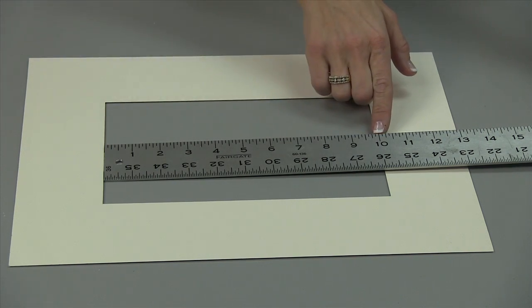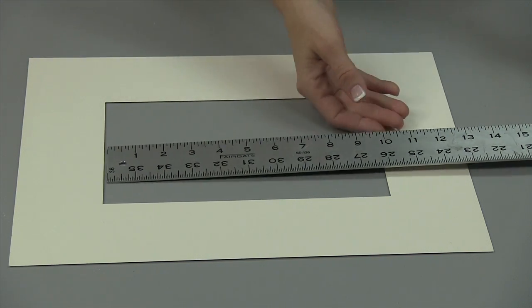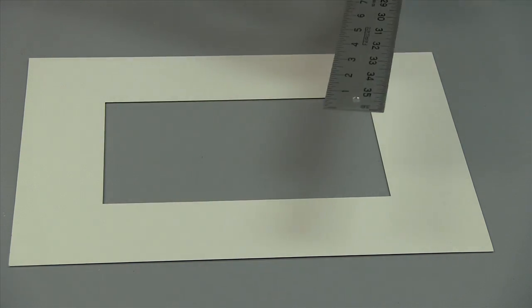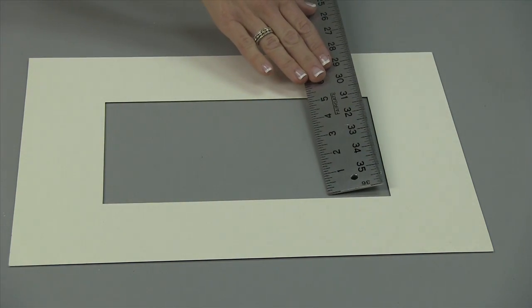To begin, measure all four sides of the opening it will fit into. If the opening is out of square, you can adjust your fillet to fit.